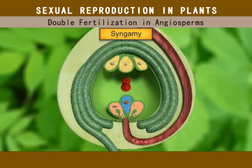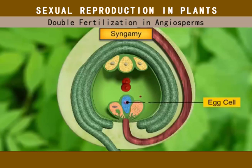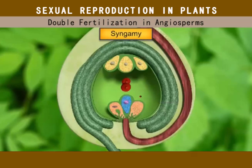Of the two male gametes, one enters the egg cell and fuses with its nucleus. This fusion, known as syngamy or first fertilization, results in the formation of a diploid zygote.